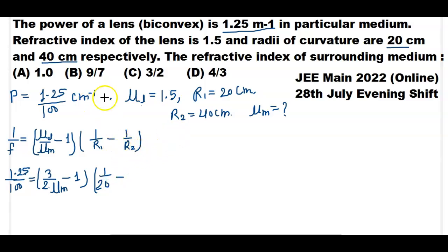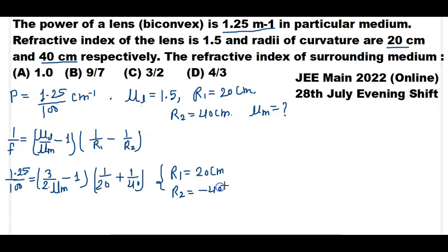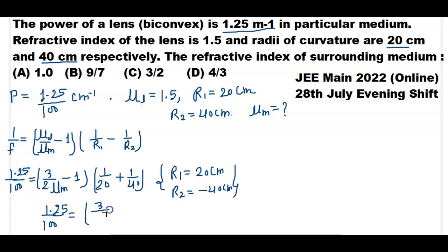For R2, the value will be negative, so minus becomes plus: 1/40. R1 = 20 cm and R2 = minus 40 cm, because its center of curvature is in the opposite direction of the incident ray. So 1.25/100 equals (3/2) into (refractive index of medium minus 1).